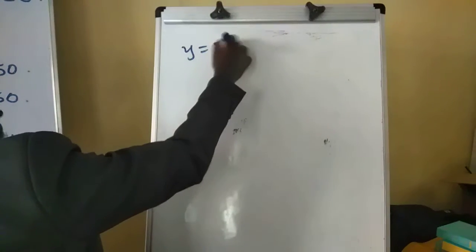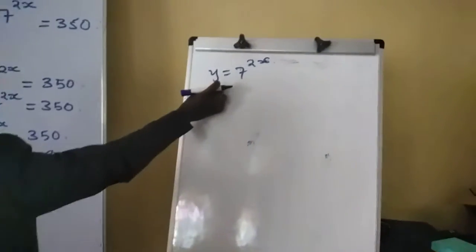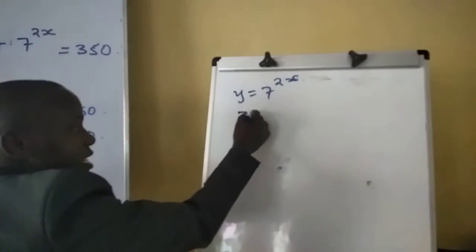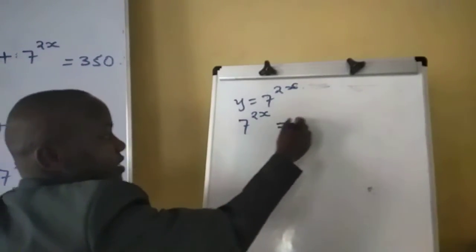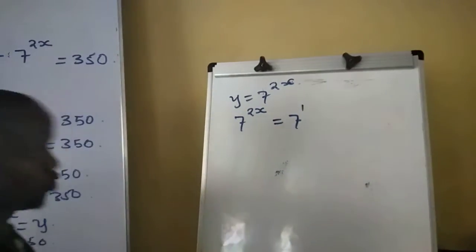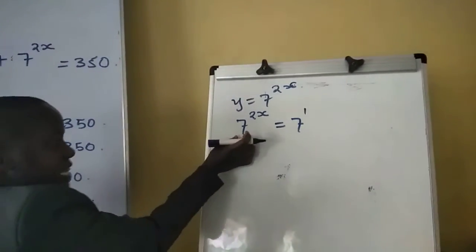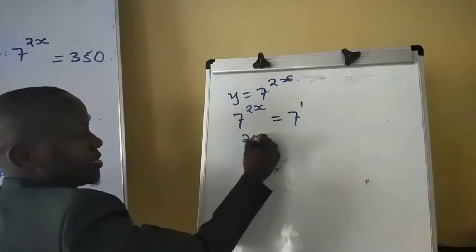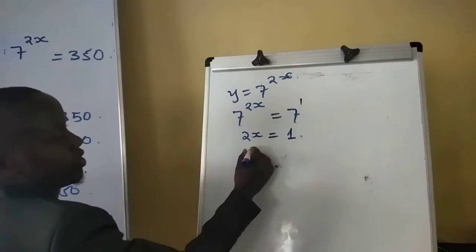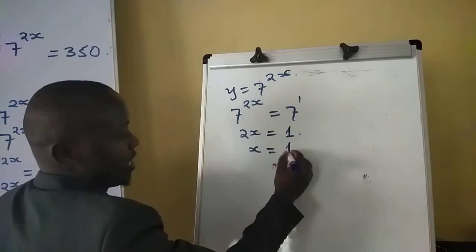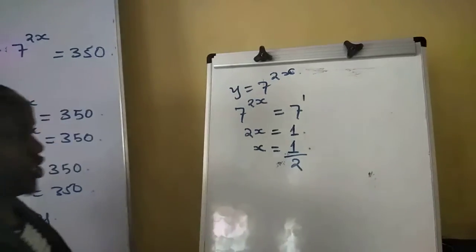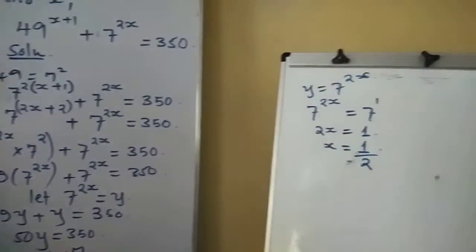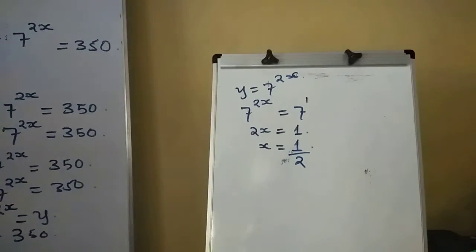Since y = 7^(2x) and y = 7, we have 7^(2x) = 7¹. Because the bases are the same, we equate the indices: 2x = 1. Dividing both sides by 2, x = 1/2.